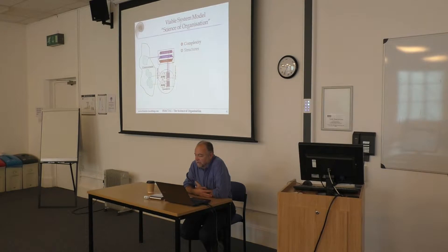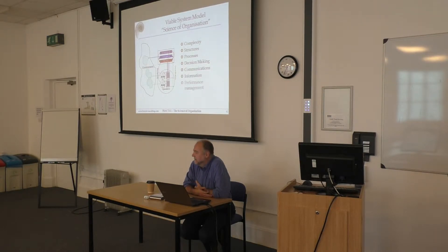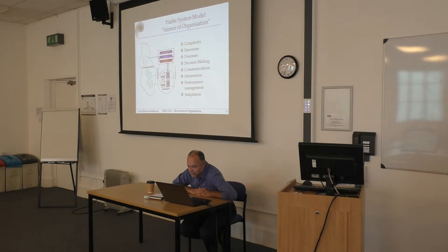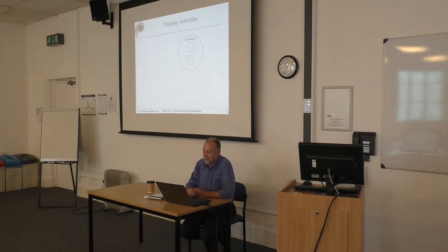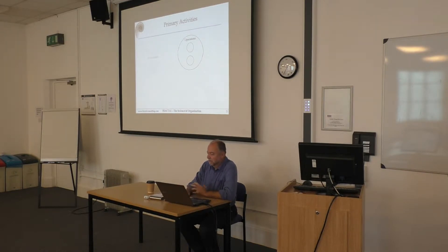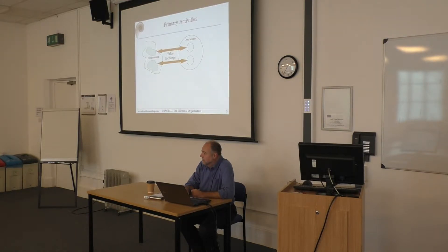We tend to draw the VSM as a sort of wiring diagram, because it's actually built around understanding how the organisation deals with complexity. It's a graphical representation of a set of complexity equations. There's quite a lot in there — structures and processes, how it takes decisions, communication, how it manages performance and adaptation. It looks horribly complicated, but it's really, really dead simple. There are only five things, or maybe six.